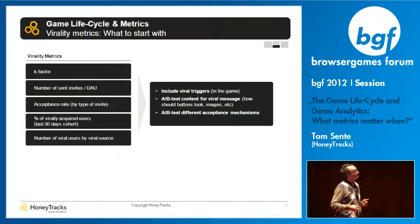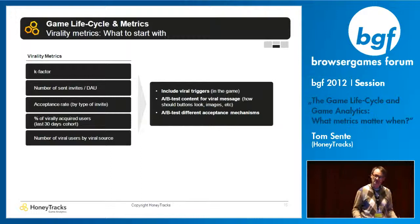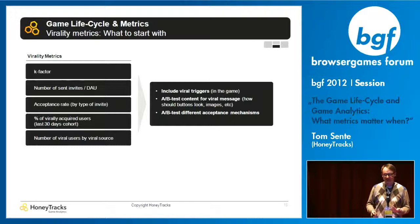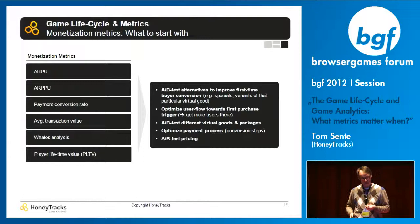Include viral triggers in your game, and test them. Make assumptions about what type of message works for which users — through emails, status messages, or whatever fits your game. Test acceptance mechanisms, see what works, and keep improving it.